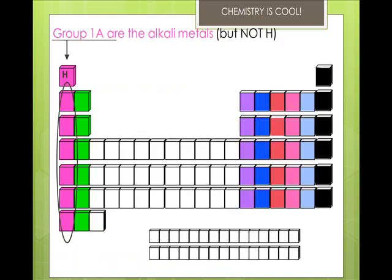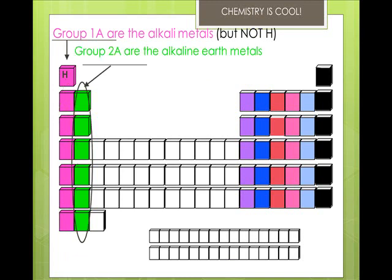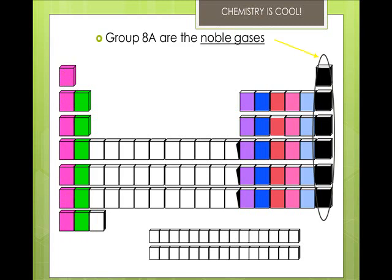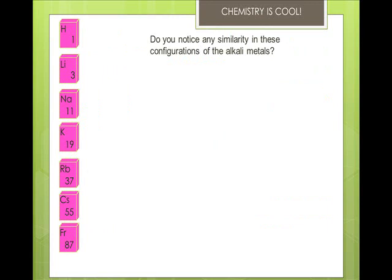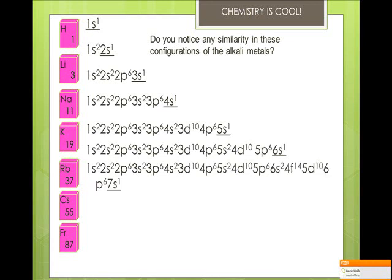Here's an example. Group 1A are the alkali metals, but do not include hydrogen. Hydrogen is considered a non-metal. Group 2A are the alkaline earth metals. Group 8A are the noble gases. Group 7A are the halogens. Notice the similarity in the configurations of the alkali metals — the outer S orbital is S1, they are partially filled regardless of what level you're on.